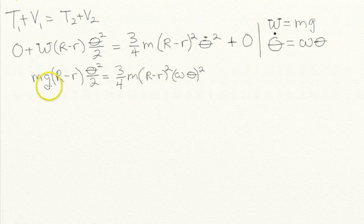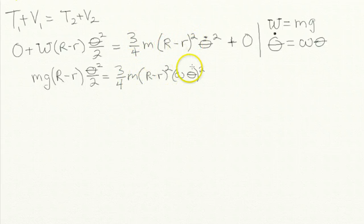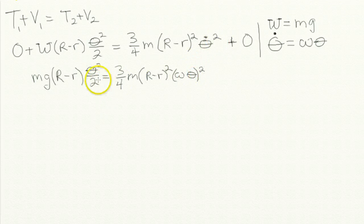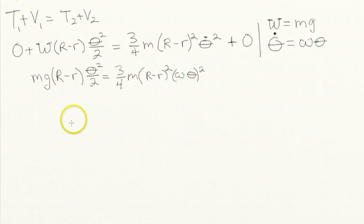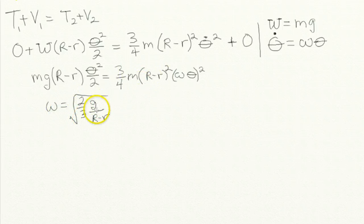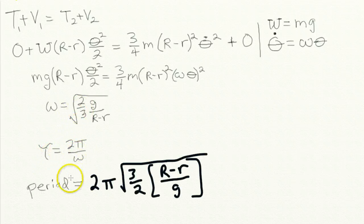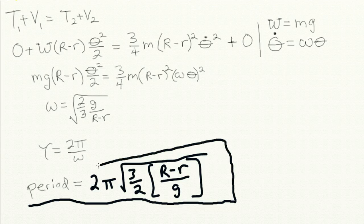Solving, omega equals the square root of two-thirds g divided by big R minus little r. The period is 2 pi divided by omega, giving the complete answer: the period equals 2 pi times the square root of three-halves times the quantity big R minus little r, divided by g.